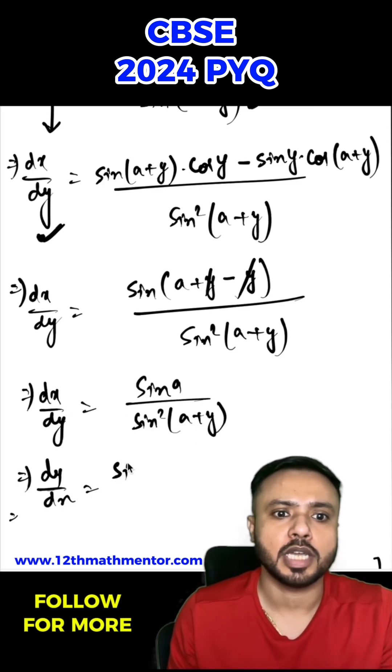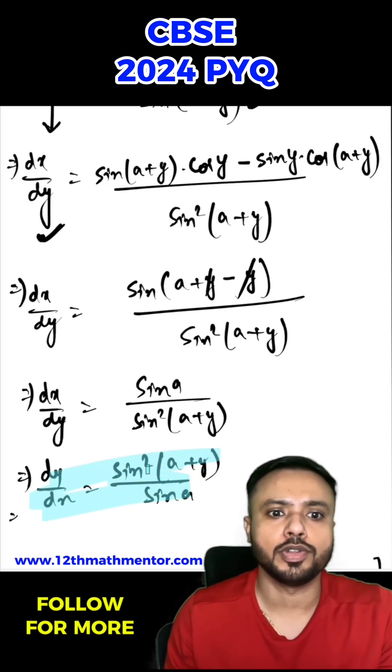Hence, I can write dy/dx = sin²(a+y) / sin a. This is what we had to prove in the question.